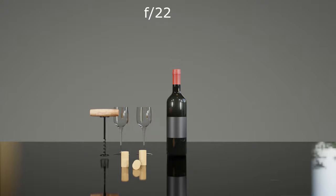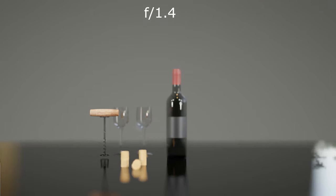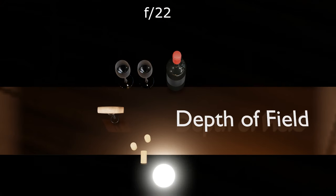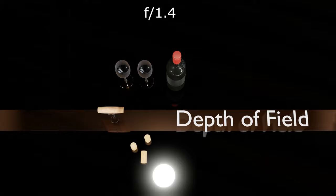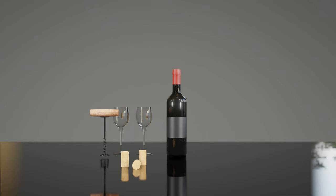Secondly, it's used to reduce the depth of field. The depth of field is the width of the plane that is in focus in your shot. For example, if we adjust the aperture to 1.4, only the wine opener is in focus and the bottle and corks are blurry.